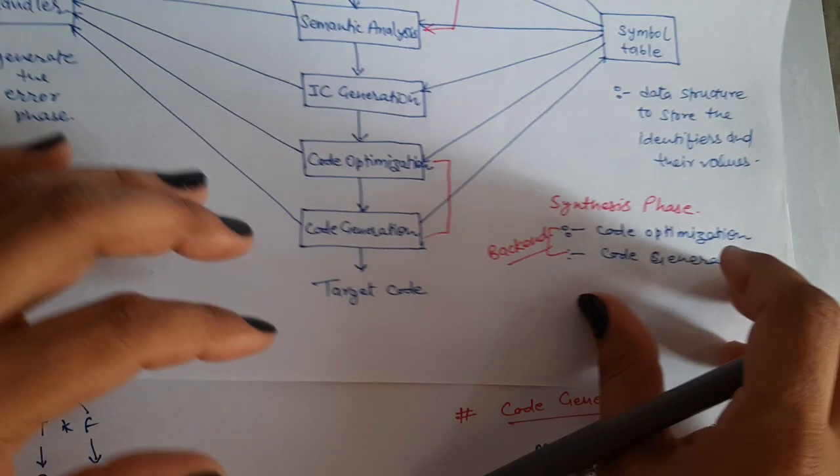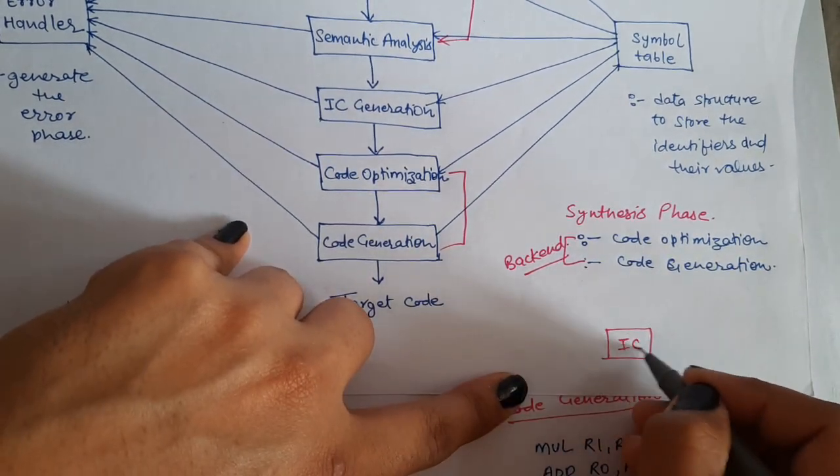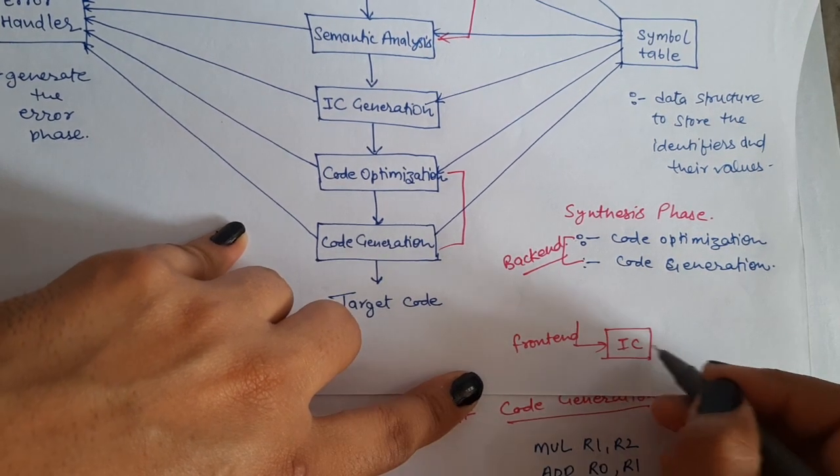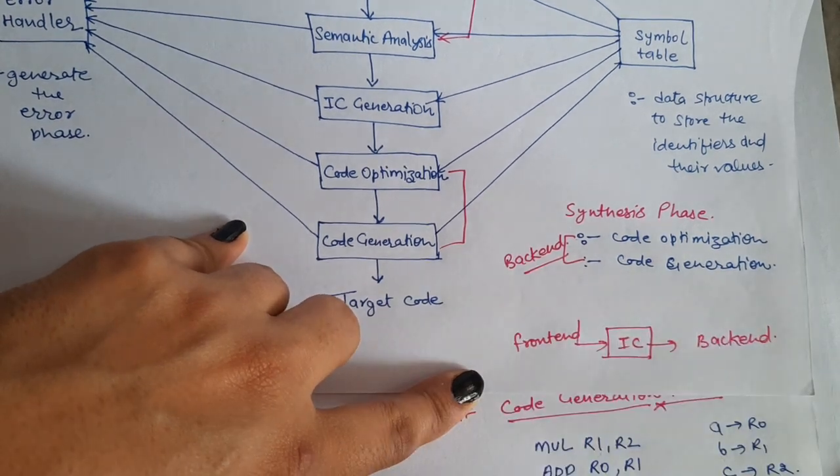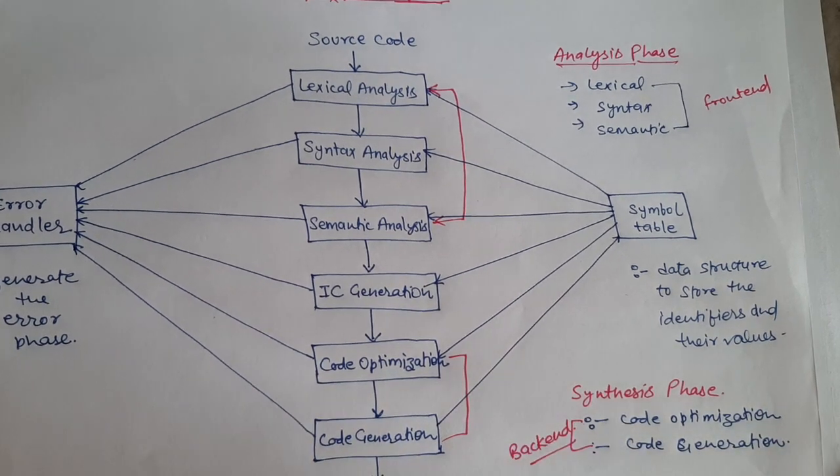And the intermediate code generation phase combines the two. This is the intermediate code, this is the front end and the back end. Thank you for watching.